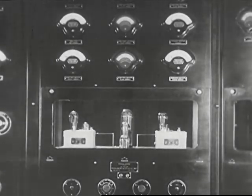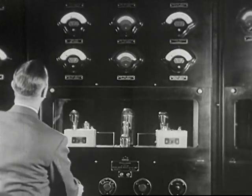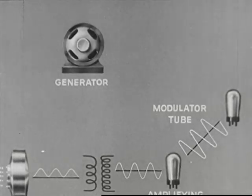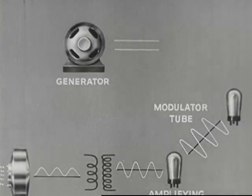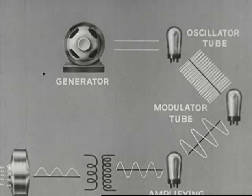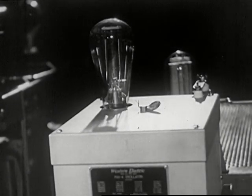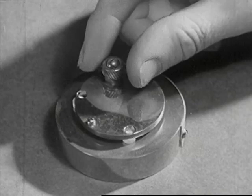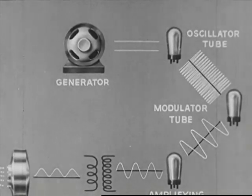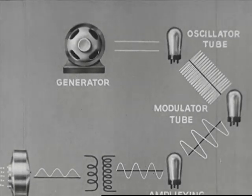The broadcasting station uses a high frequency current called the carrier wave to transmit the message. A generator supplies a direct current to the oscillator tube. The oscillator tube changes this direct current to a high frequency alternating current of several hundred thousand cycles per second. The box below this oscillator tube contains a quartz crystal which keeps the carrier wave at a constant frequency. This radio frequency current also goes to the modulator tube.